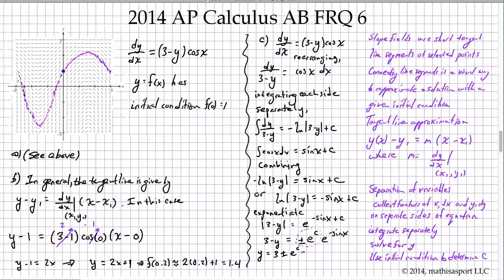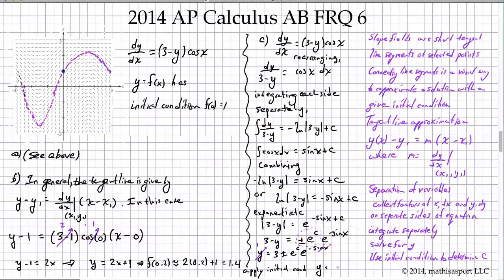We haven't specified anything yet, so y equals 3 plus or minus e^C times e^(negative sine x). Applying the initial condition y(0) = 1: 1 equals 3 plus or minus e^C times e^0, so plus or minus e^C must equal negative 2. Therefore, applying the initial condition leads to F(x) equals 3 minus 2e^(negative sine x).